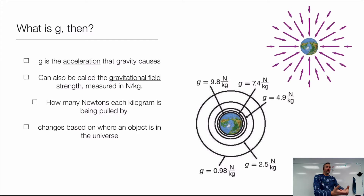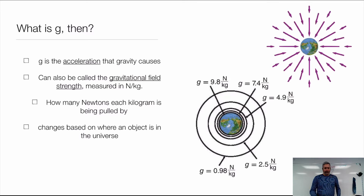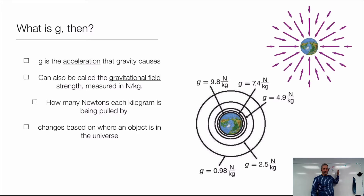Up until now, we've talked about it in terms of meters per second per second — what it does to things. Now we can talk about it in terms of force: newtons per kilogram — how many newtons one kilogram of mass is attracted to the Earth by. The gravitational field strength tells us how strong the gravitational field is at that distance from an object. The Earth's gravitational field strength is by far the most obvious one to us because when we drop something, it falls to Earth. So little g changes based on where we are in the universe; big G is universal — it stays the same.